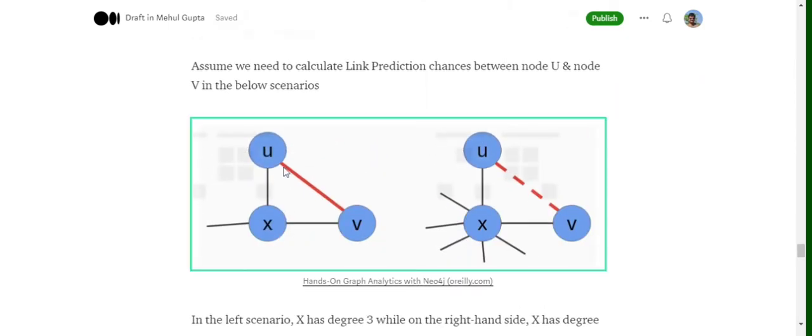Let's move with this example. In the first case, we are trying to predict the edge between U and V, whether an edge can exist or not. Now we see that they have a common connection X.